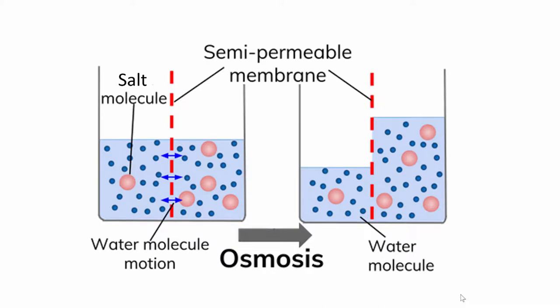If you seal the container to prevent the water level from rising, osmotic pressure causes the membrane to swell in the direction of the side containing pure water.